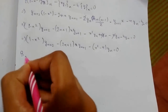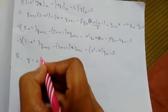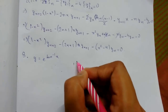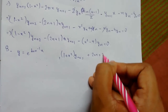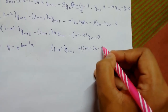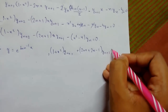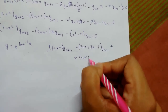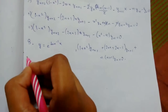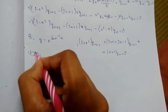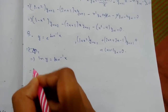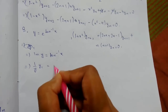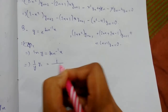Moving to the third example: y = e^(tan⁻¹x). We have to prove that (1+x²)·y_{n+2} + (2nx + 2x − 1)·y_{n+1} + n(n+1)·y_n = 0. First, taking log on both sides gives ln y = tan⁻¹x. Differentiating: (y₁/y) = 1/(1+x²).